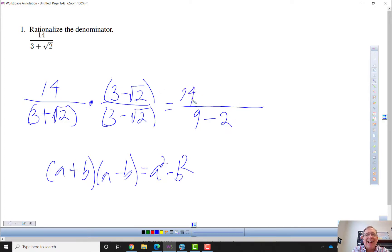And at this point, my preference is not to distribute the 14. And then 9 minus 2 is 7,